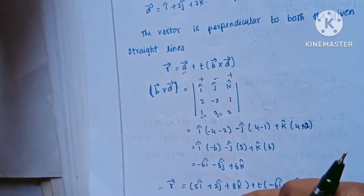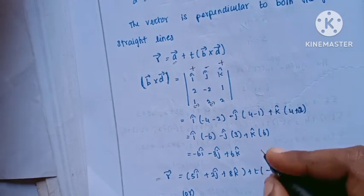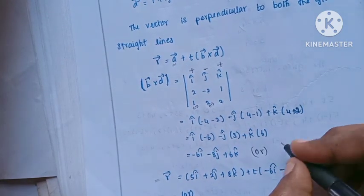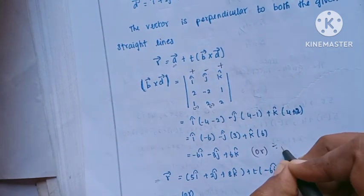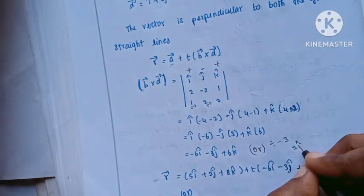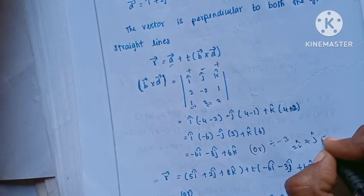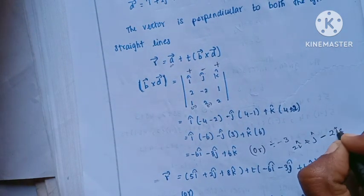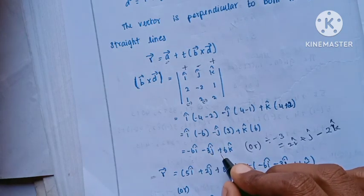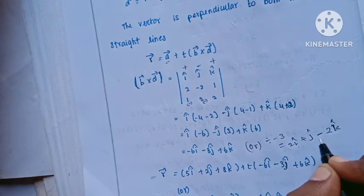So b cross d equals minus 6i minus 3j plus 6k. We divide by the common factor minus 3, giving the direction vector as 2i plus j minus 2k.